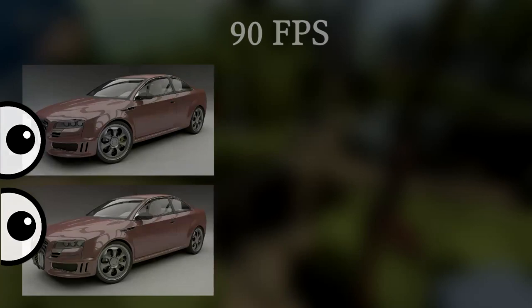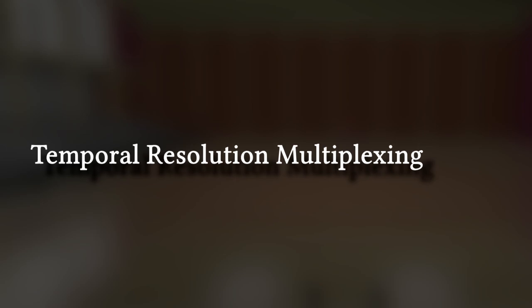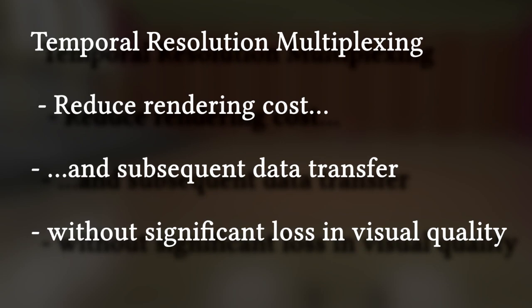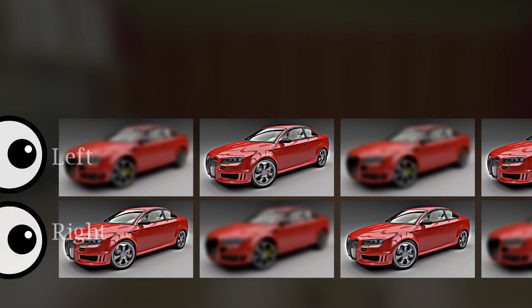We propose a technique called Temporal Resolution Multiplexing, or TRM for short. TRM reduces the rendering cost and subsequent data transfer without significant loss in visual quality. TRM renders every other frame at a lower resolution in order to exploit limitations in the visual system.